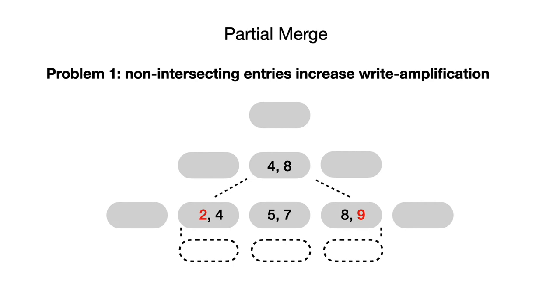However, partial merge has its own set of problems. First, for each file being merged from a smaller level into a larger one, there are some non-intersecting entries, as shown in red, in the edge-intersecting files at the larger level. On average, one extra file's worth of data is superfluously included in each compaction operation. This increases write amplification.